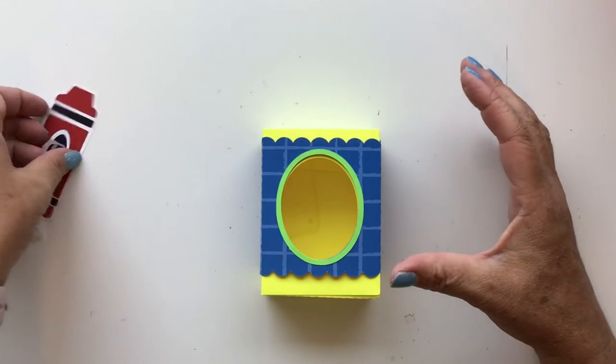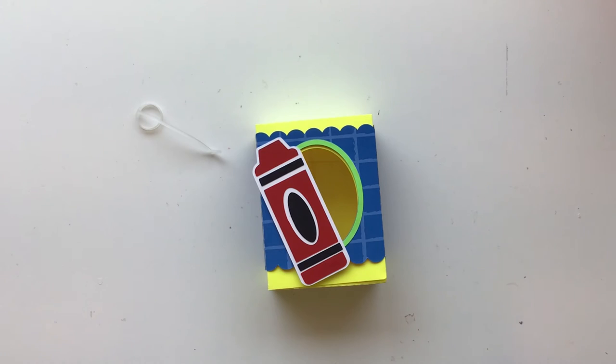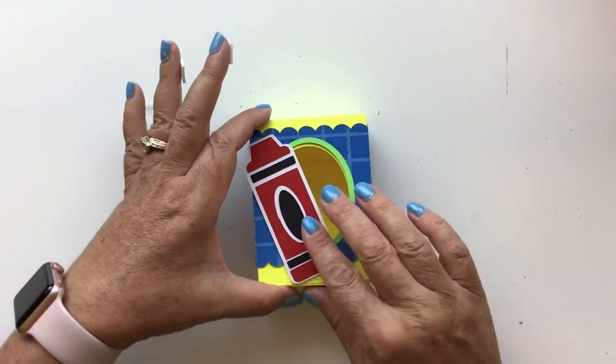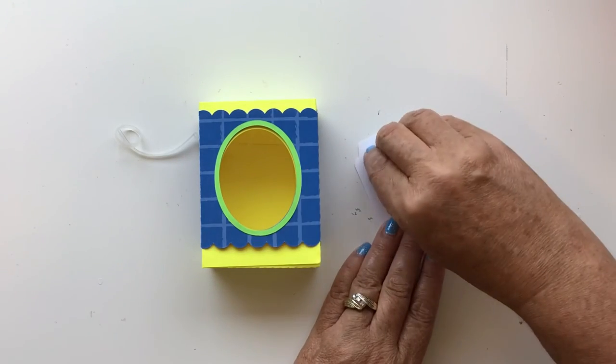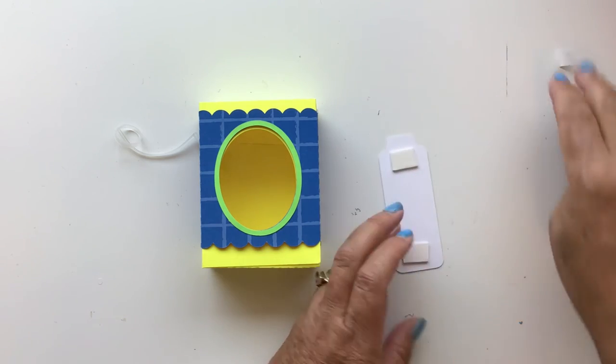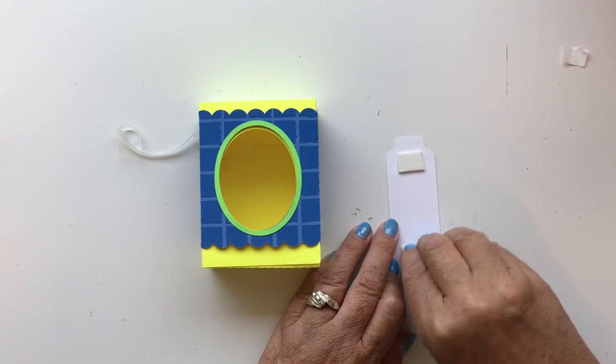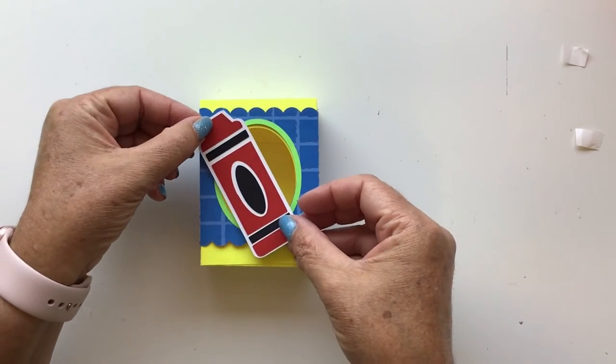And then you've got these little crayons that you can decorate it with. And I'm going to actually take some foam pop dots again, my favorite thing. Go ahead and just lay that across there like that.